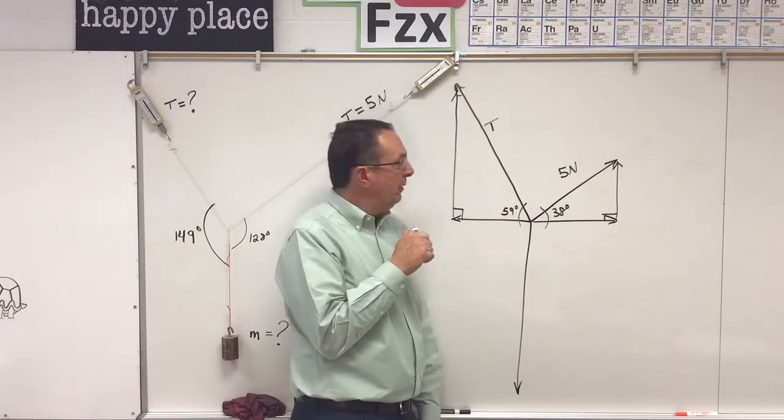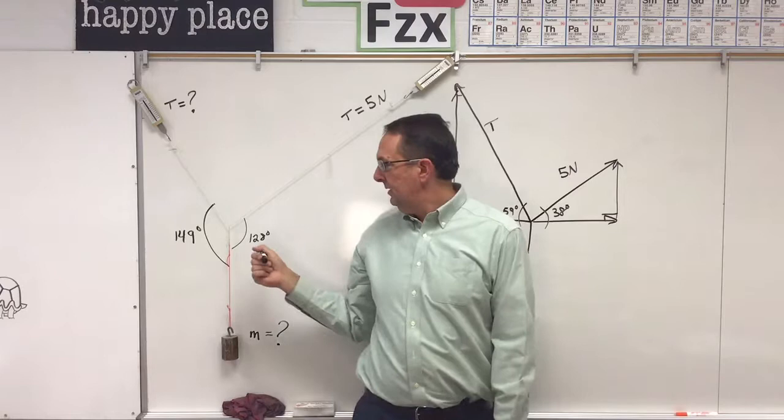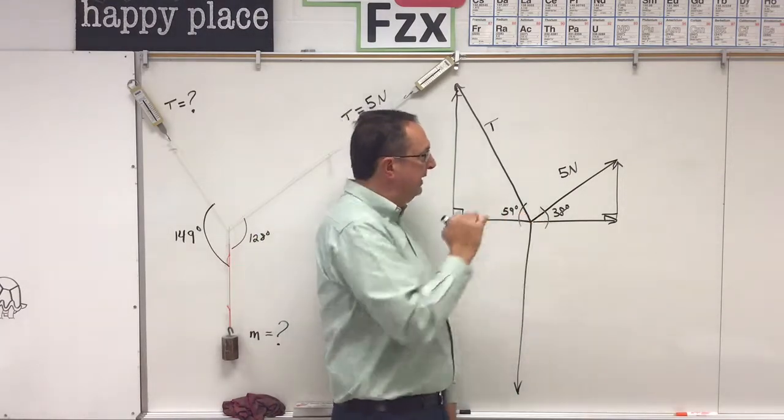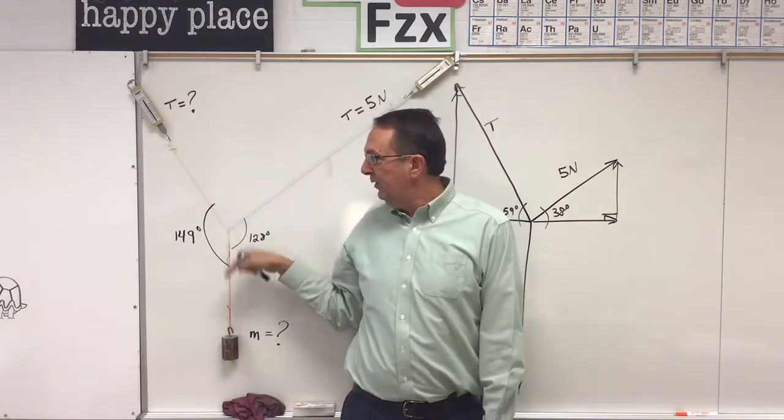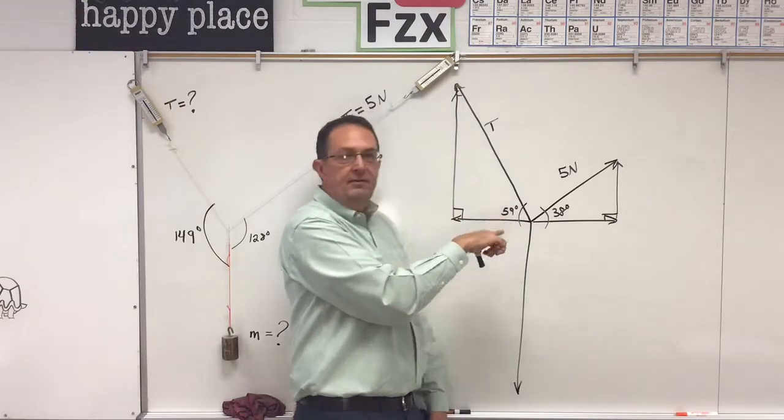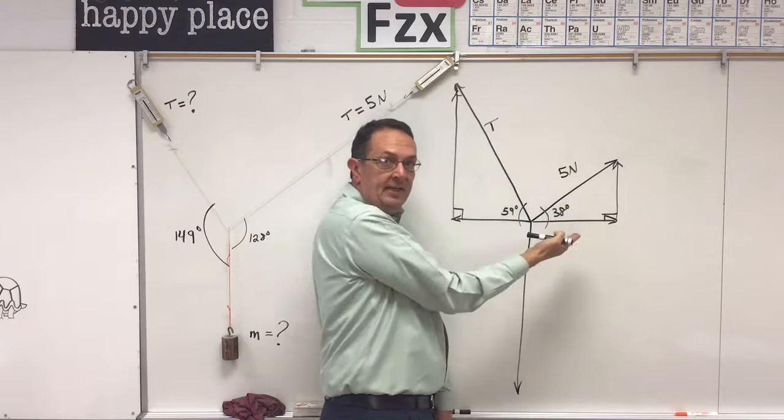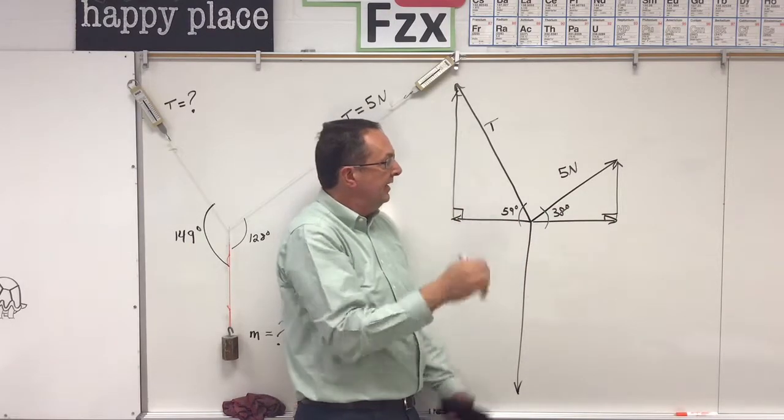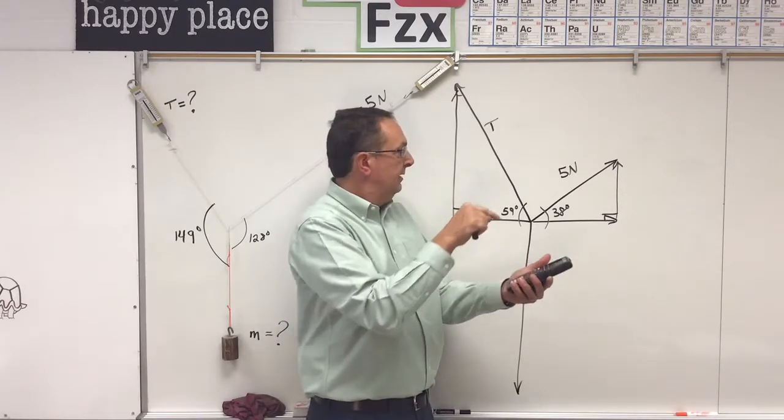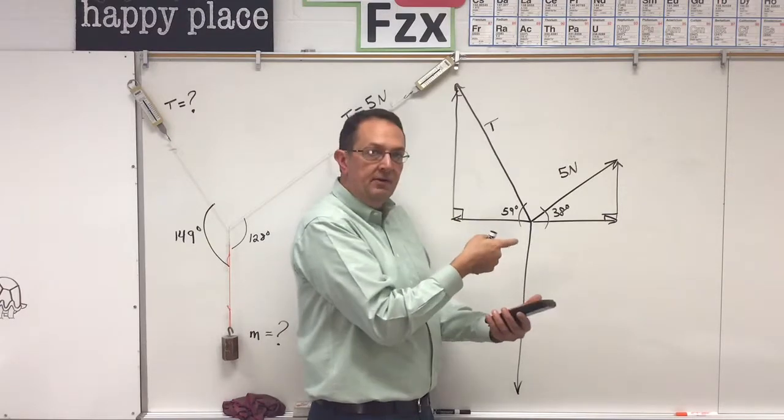So here's the free body diagram. What we have so far, five newtons, 38 degrees, because this, well 90, this is vertical, 128 minus 90 gives you 38 degrees, and this is vertical, so 149 minus 90 gives you 59 degrees. This is closer to the vertical, that's closer to the horizontal. This is the short leg, that's the long leg, this is the short leg, that's the long leg, and I know that all I have to do in the calculator is go five cosine 38, enter, and five sine 38, enter, and put the proper values in there.